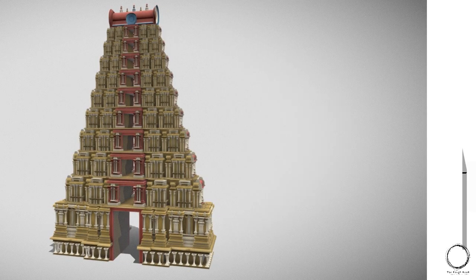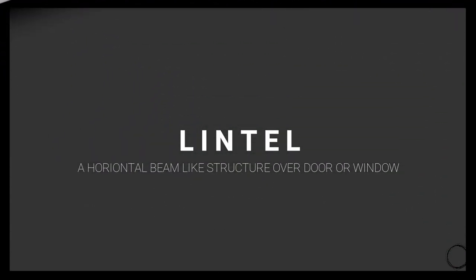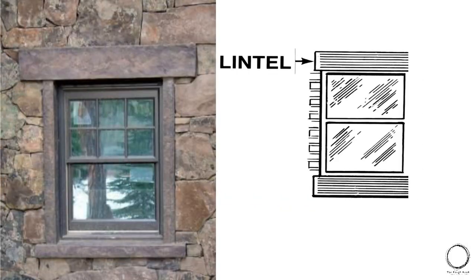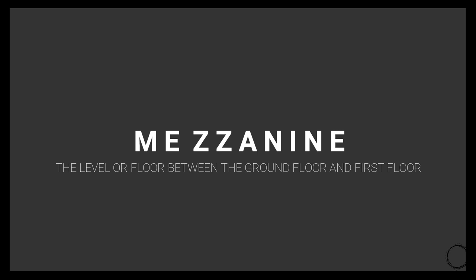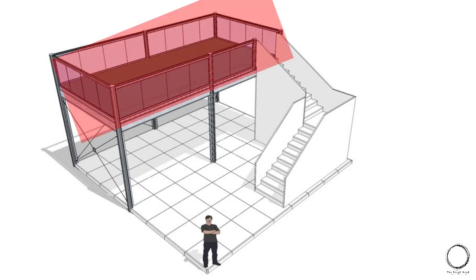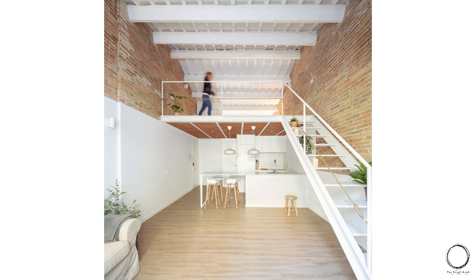The next term is lintel — a horizontal beam-like structure over a door or window. The upper part of a door or window that supports it is called a lintel. Note: it is not called a beam; a beam supports the slab, while the lintel is right above the window or any opening. Moving on, mezzanine is a level or floor between the ground floor and the first floor — a double-height volume with an additional level inserted in between.